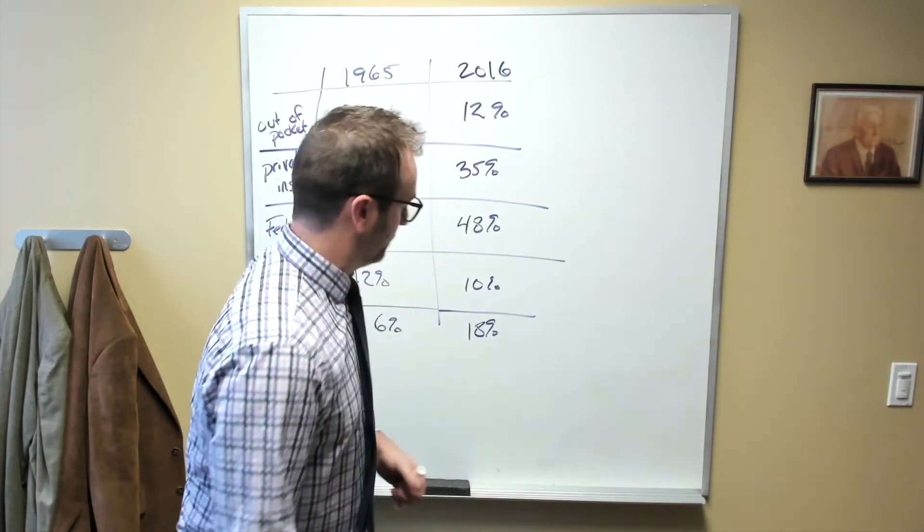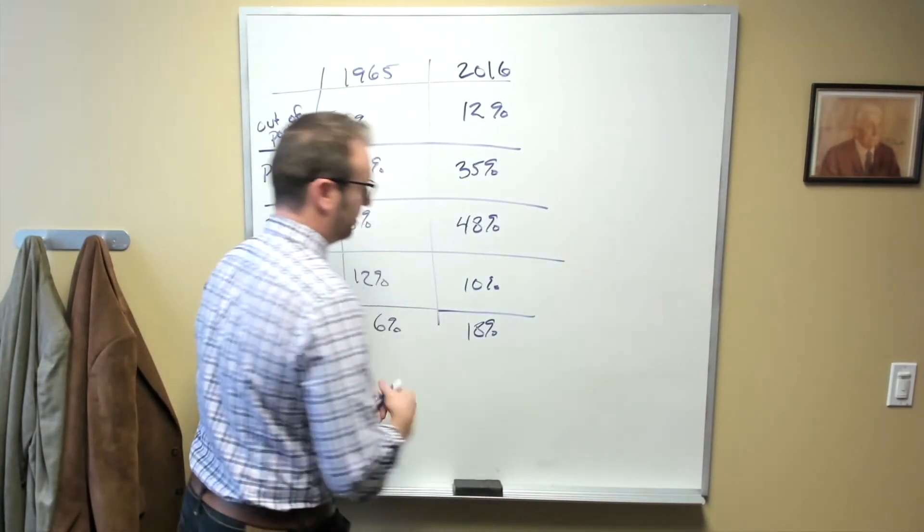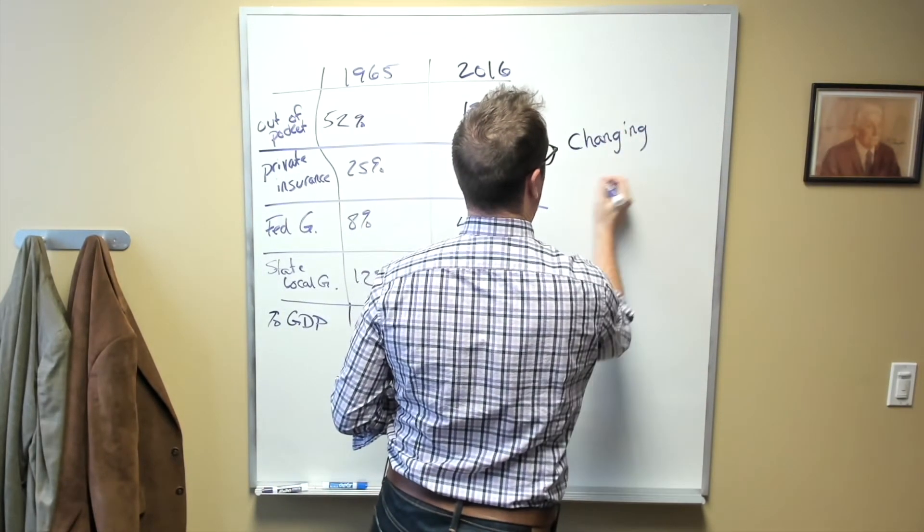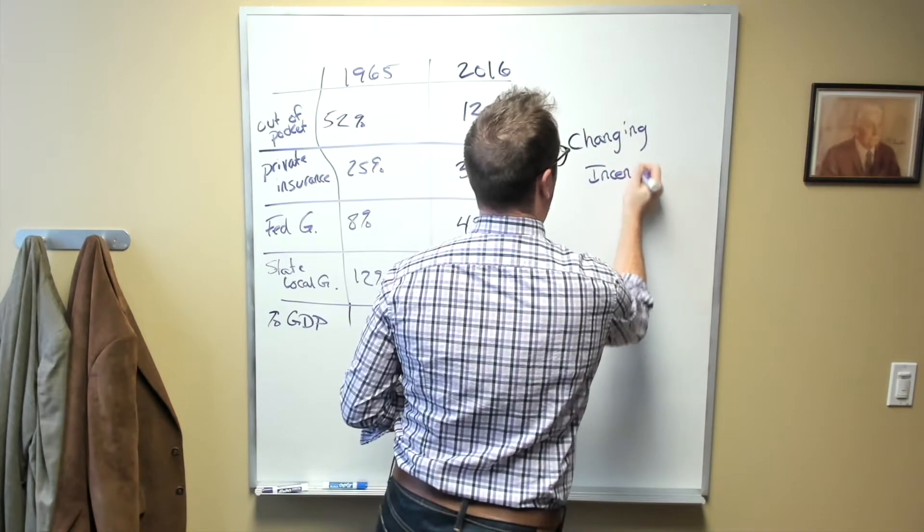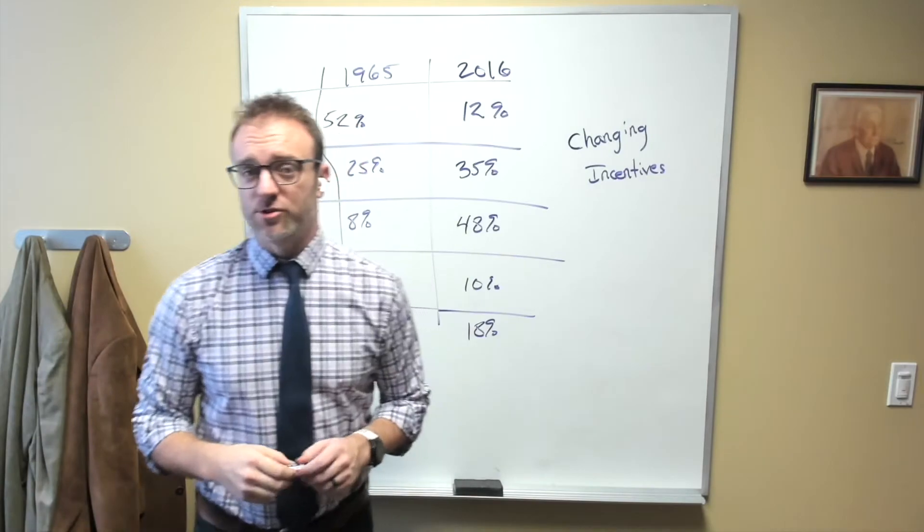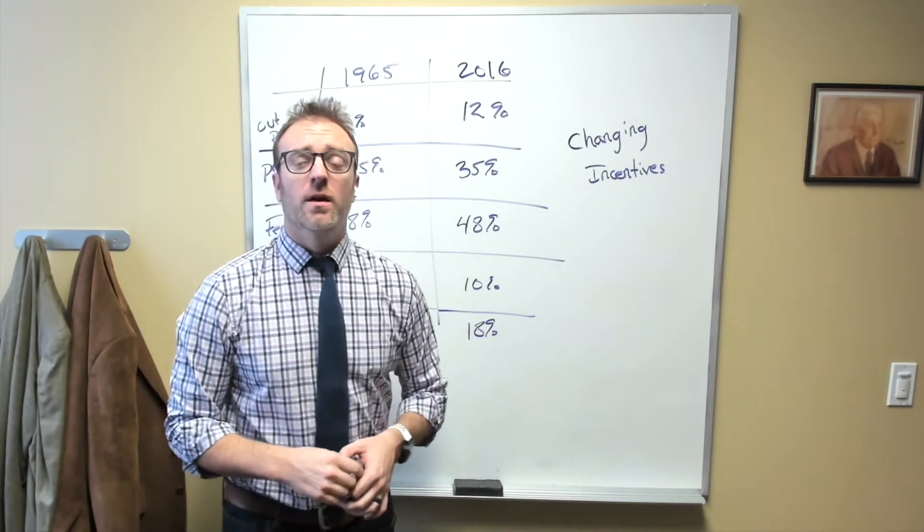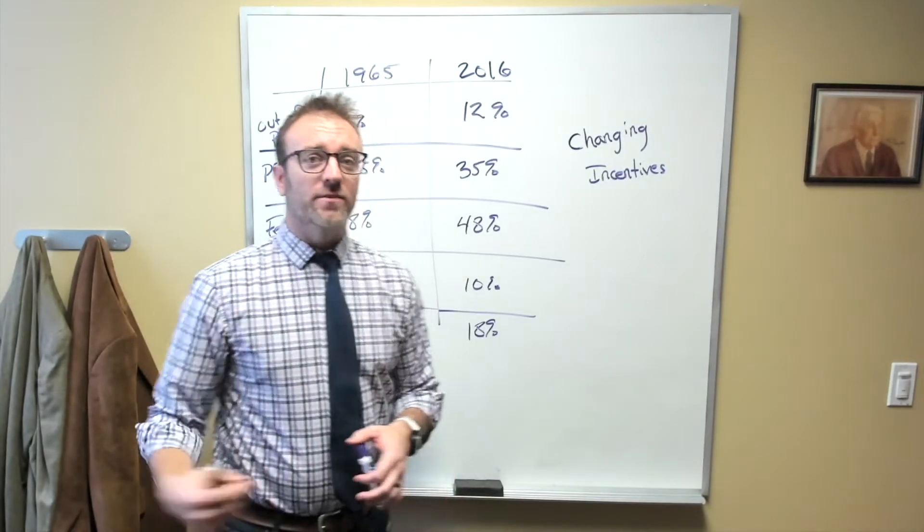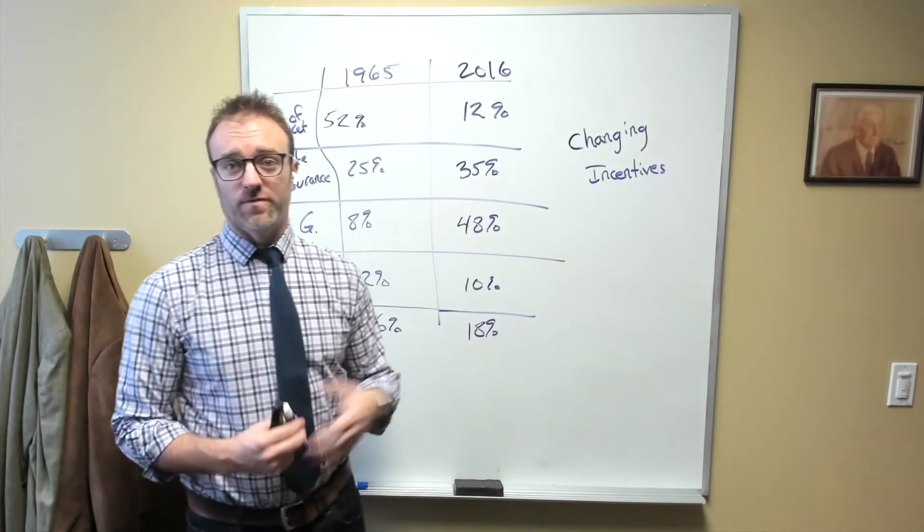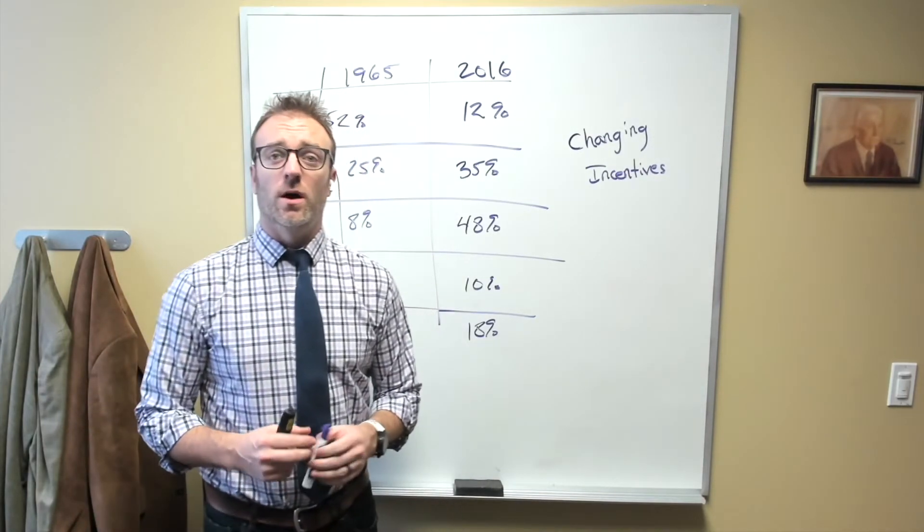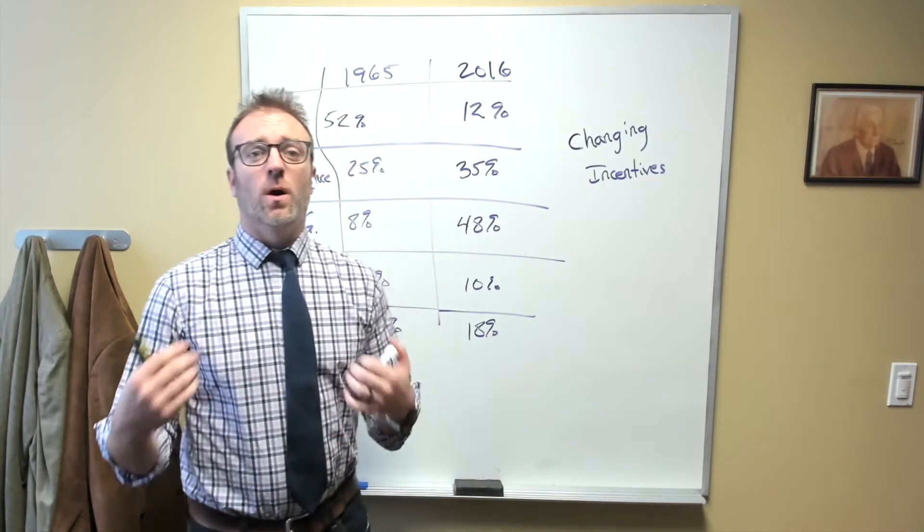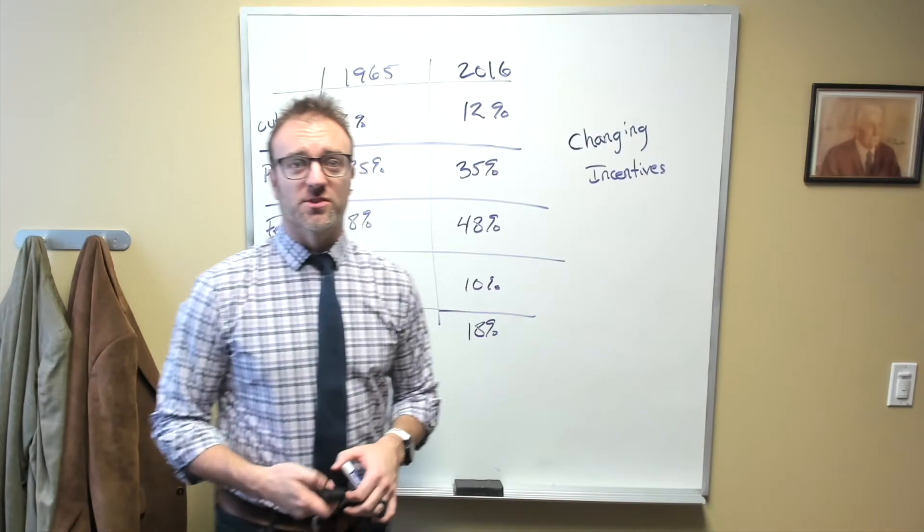The third answer, and the one that economists always like to kind of focus on, would be changing incentives. And specifically, there have been lots of changes to the incentives for delivering health care that might have actually had the effect of manifesting as higher prices for health care, which means that even if the first two factors that we talked about weren't happening, we would still get more spending on health care as the cost or the price of health care continues to skyrocket.